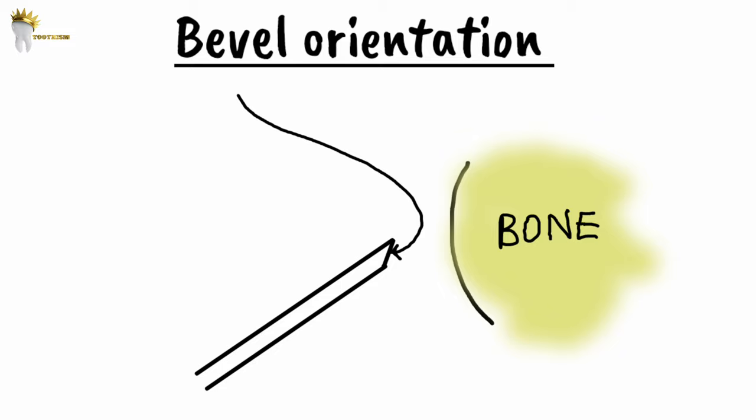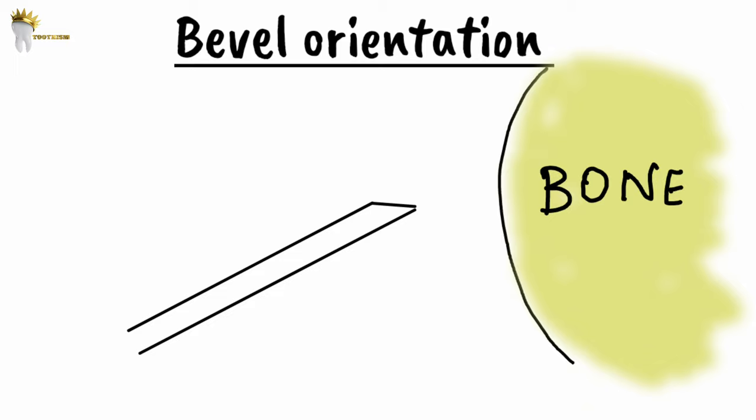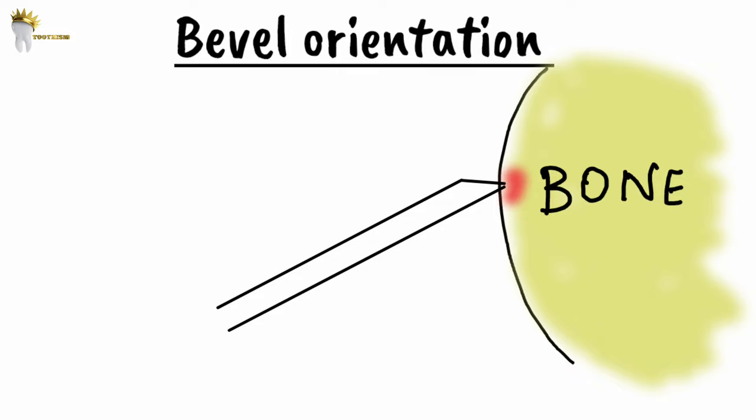The bevel of the needle should be facing the bone. Although we are not supposed to contact bone here, if contact does occur the sensation will be less painful with the bevel facing the bone. If the bevel faces away from the bone, the sharp needle tip will tear the periosteum, which is painful for the patient. So the bevel should always be facing the bone.